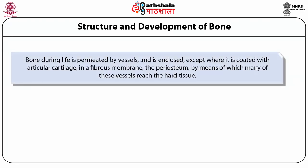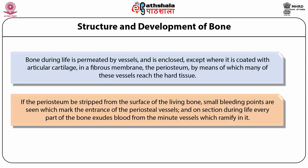Bone during life is permeated by vessels and is enclosed — except where it is coated with articular cartilage — in a fibrous membrane, the periosteum, by means of which many of these vessels reach the hard tissues. If the periosteum is stripped from the surface of the living bone, small bleeding points are seen which mark the entrance of periosteal vessels, and on section during the remaining life of every part of the bone, blood exudes from the minute vessels which ramify in it.